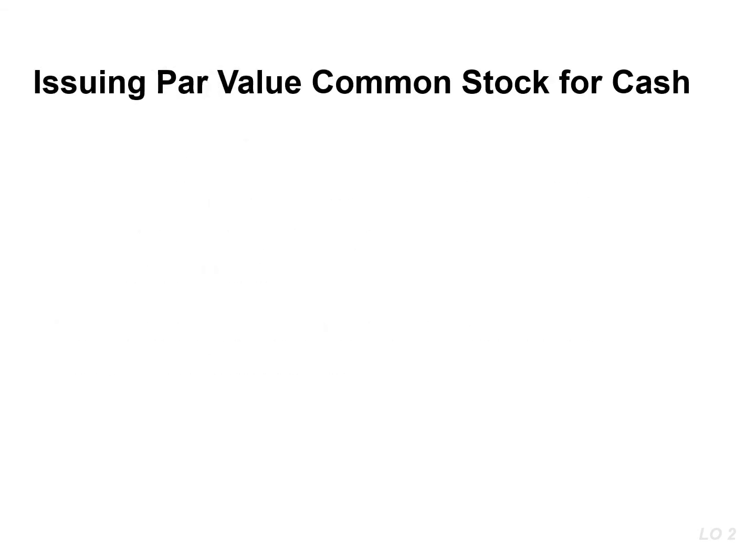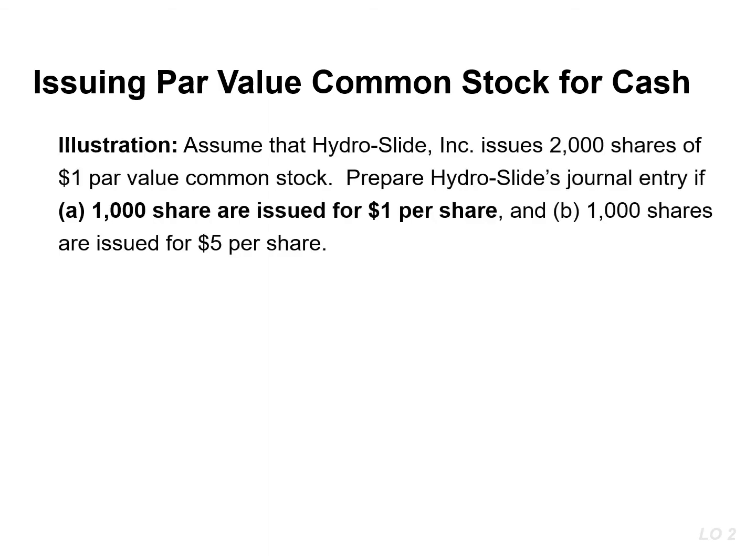When a company records the issuance of common stock for cash, it credits the par value of the shares to common stock. Amounts received in excess of par value are recorded in the account paid-in capital in excess of par value. For example, if this company issues 1,000 shares of $1 par value common stock for $1 per share, the entry results in a debit to cash for $1,000 and a credit to the common stock account for the same amount.